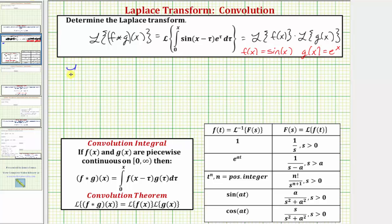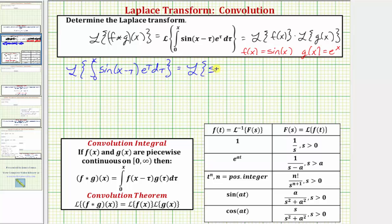So the given Laplace transform of the integral from zero to x of sine of the quantity x minus tau times e to the tau d tau equals the Laplace transform of f(x), which is sine x, times the Laplace transform of g(x), which is e to the x.